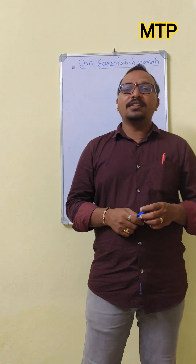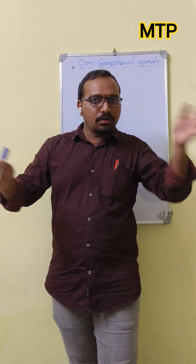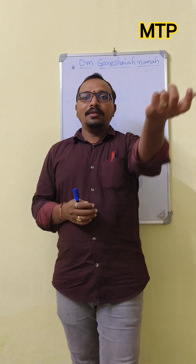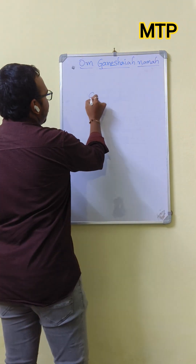Hello guys, welcome back to our channel. Today we are going to discuss the main difference between speed and velocity. Speed means nothing but the distance traveled by a body per unit time in any direction — not specifically east, west, north, or south. It can be any direction, and that's why speed is a scalar quantity.